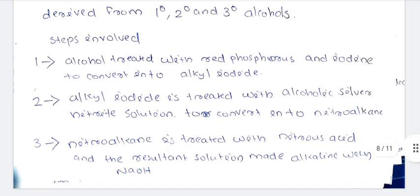Let me simplify this. The first step: alcohol is treated with red phosphorus and iodine to convert alcohol to alkyl iodide. You can treat it with red phosphorus (P) and iodine. This gives us the alkyl iodide.